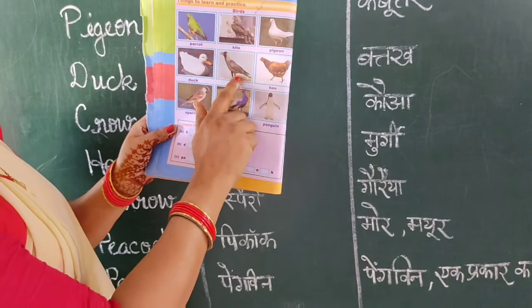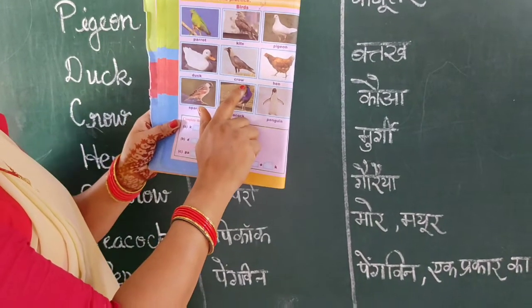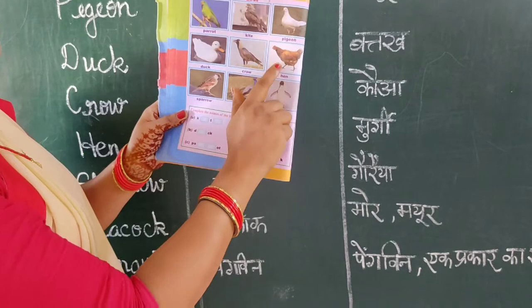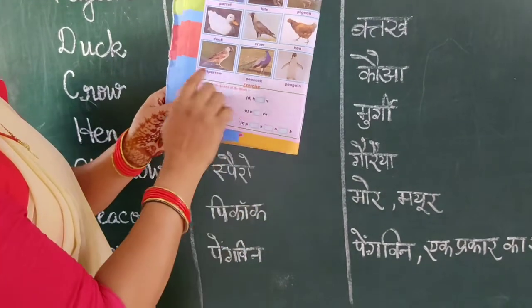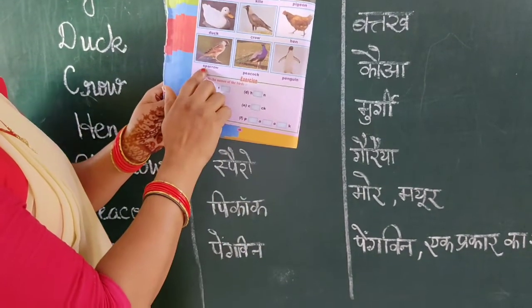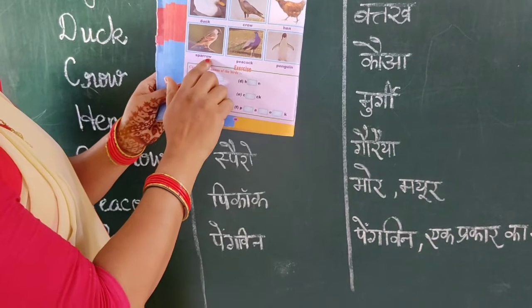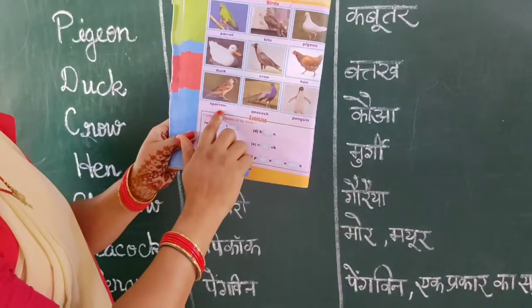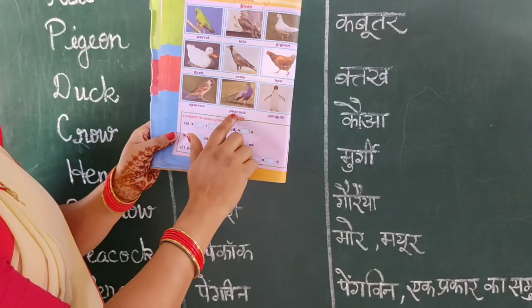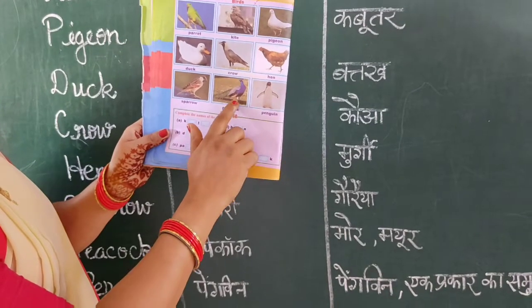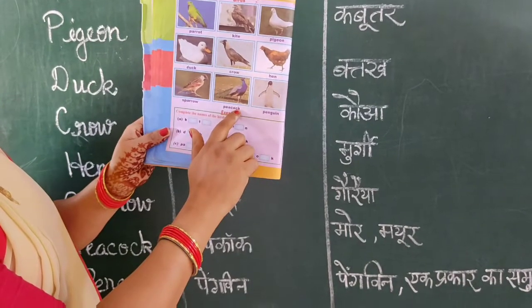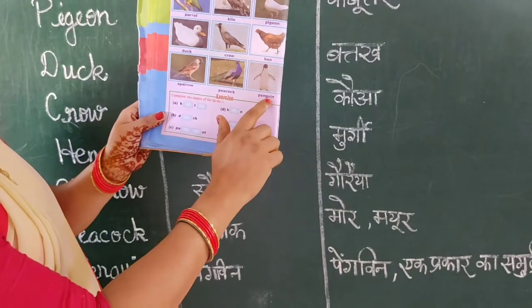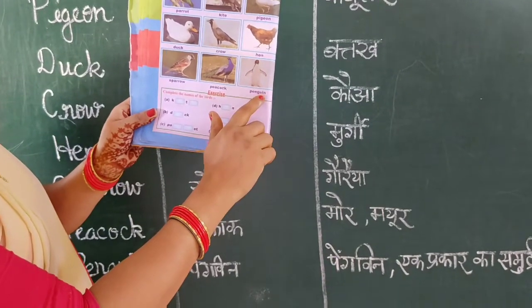CROW means PO. HEN means NURGI. Sparrow — Law meaning Sparrow. Sparrow means Gaulaya. This is a P-E-A-C-O-C-K, Peacock. P-E-N-G-U-I-N, Penguin.